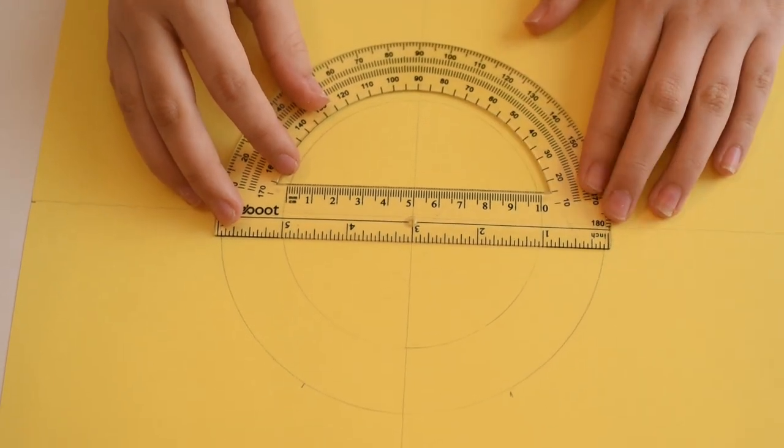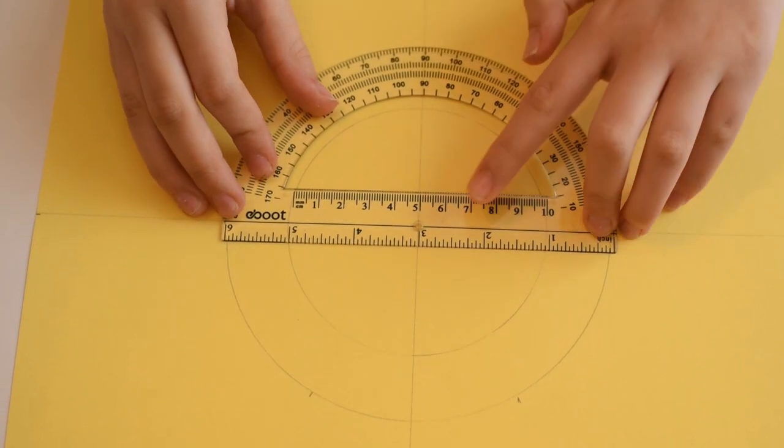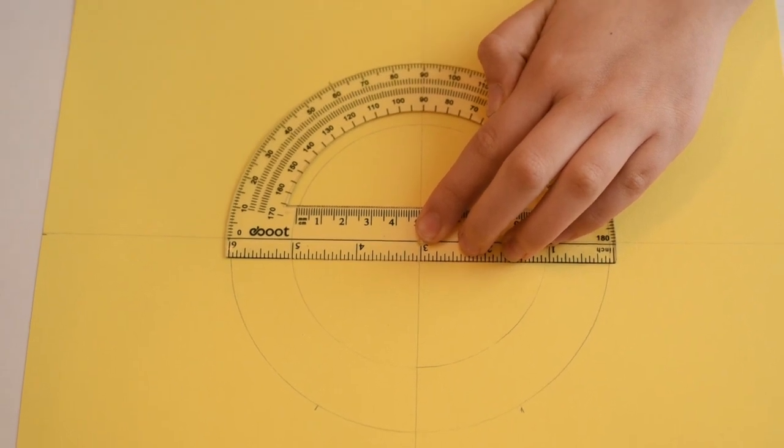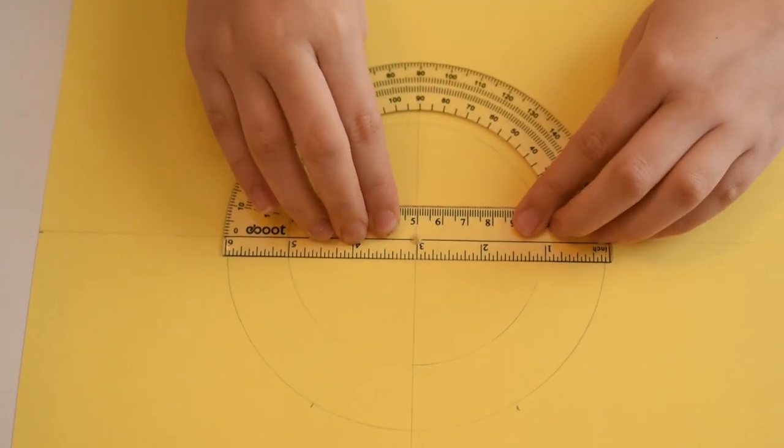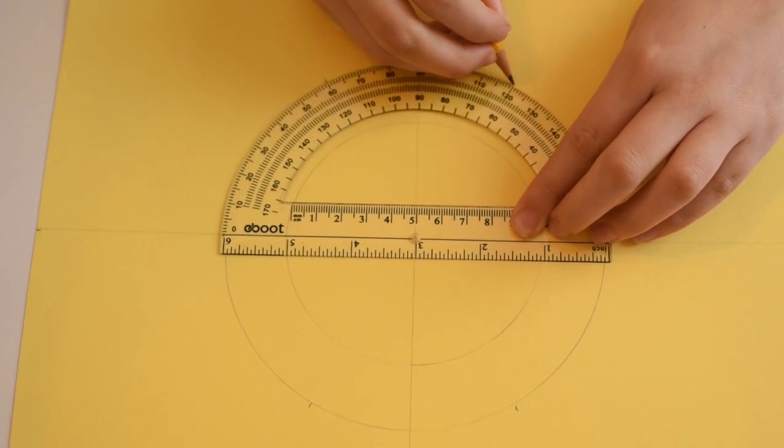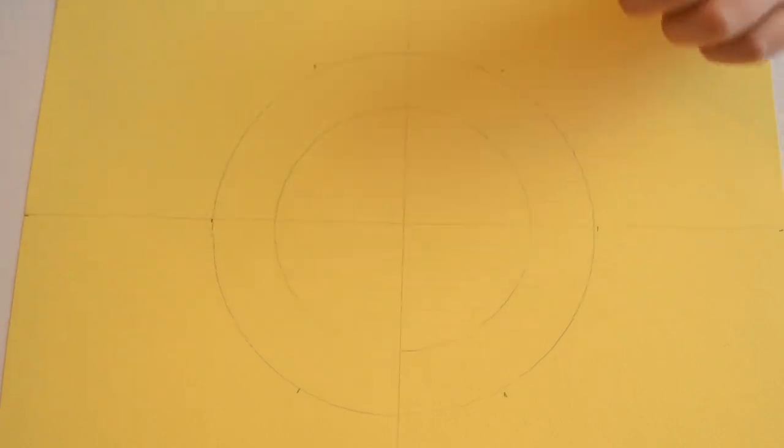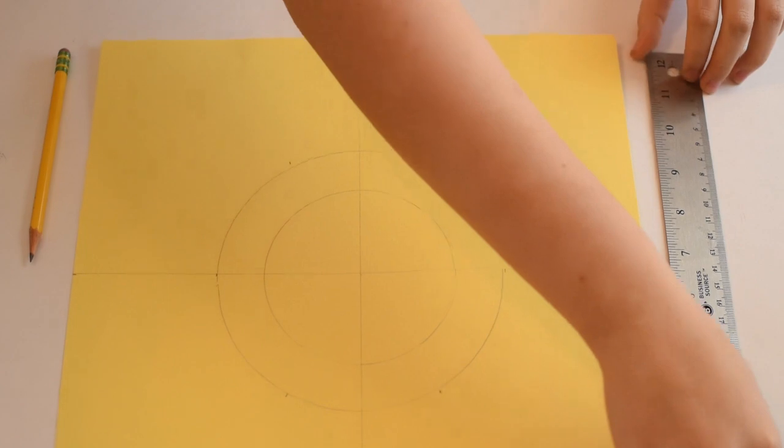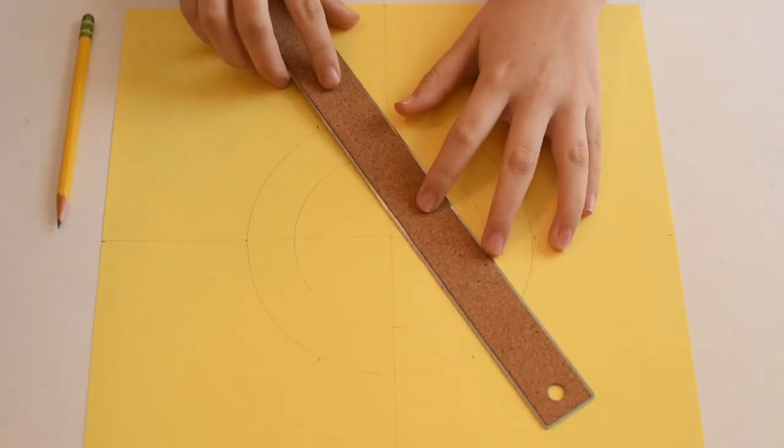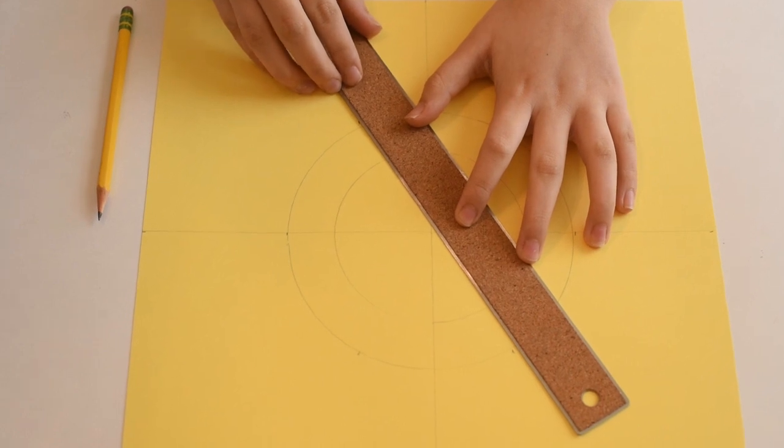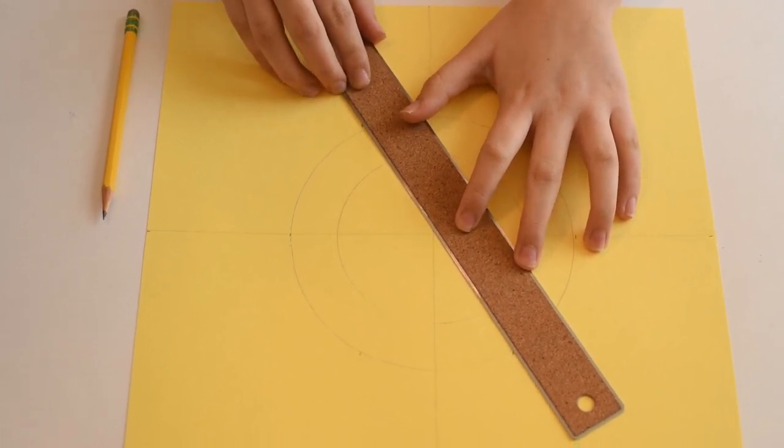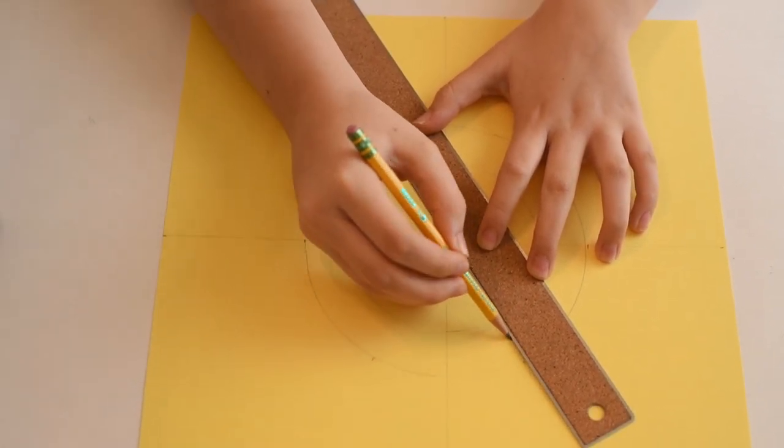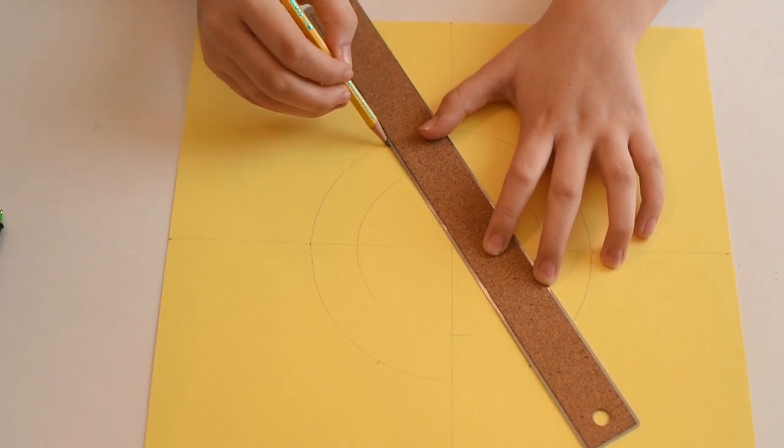We'll put the line of the protractor on our horizontal line and measure to 60 degrees. And then at 120 degrees and put a dot at each spot. Now we'll place our ruler on the dots crossing the midline of the circle. And we'll just draw slanting lines from the 2 inch circle out to the edge of the 3 inch circle. And we'll do that at each of our 60 degree points.